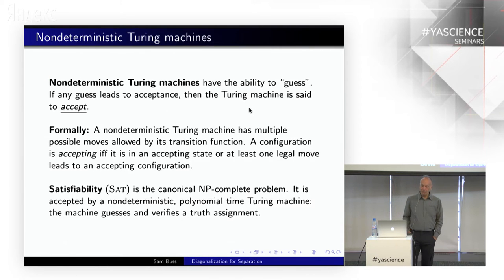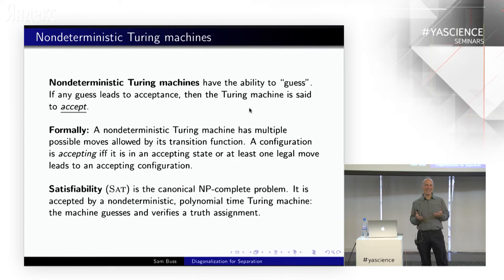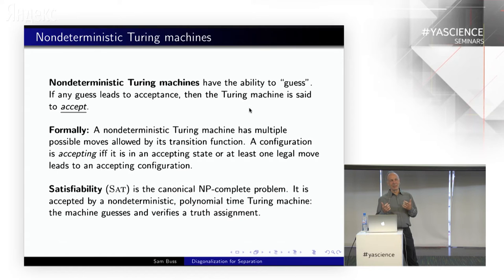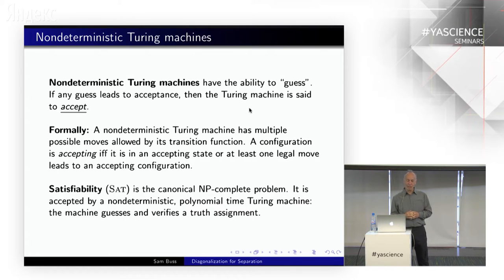The time hierarchy for non-deterministic Turing machines is harder. A non-deterministic Turing machine has the ability to guess — it can guess the answer, but you also have to verify. If any guess leads to an accepting state, the machine accepts. Formally, a non-deterministic Turing machine has multiple possible moves at any point; a configuration is accepting if it's explicitly accepting or if one of the legal moves leads to acceptance. Satisfiability is the canonical NP-complete problem: an NP machine accepts by guessing a satisfying assignment and verifying it makes the formula true.